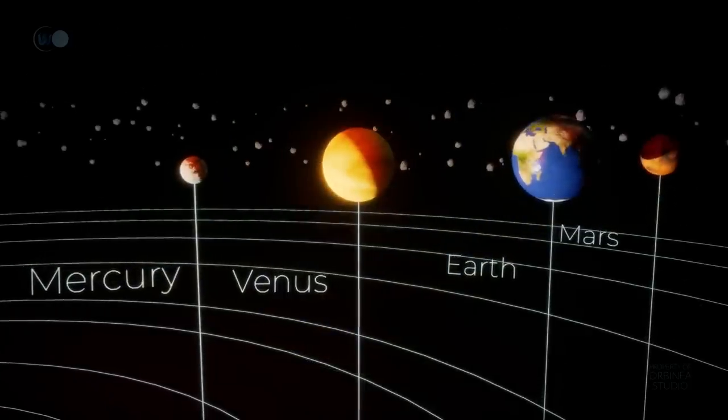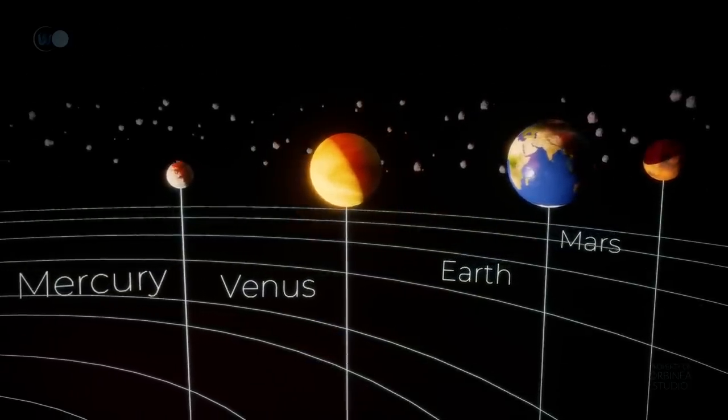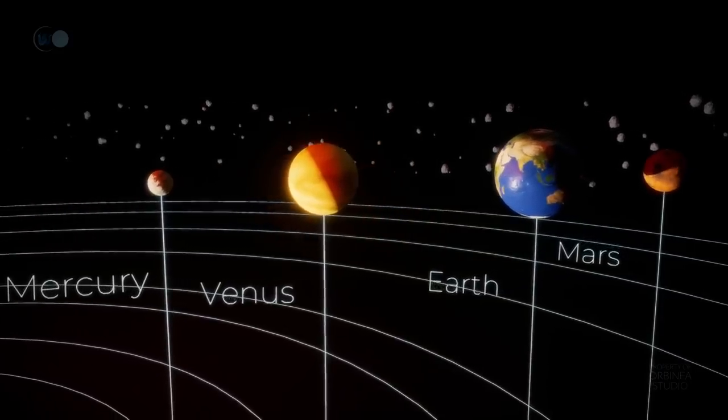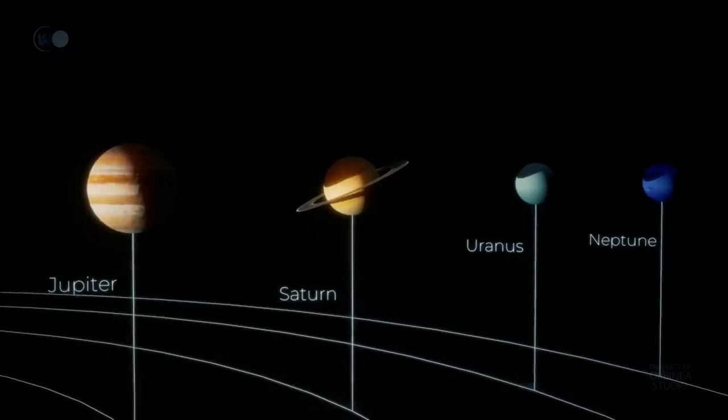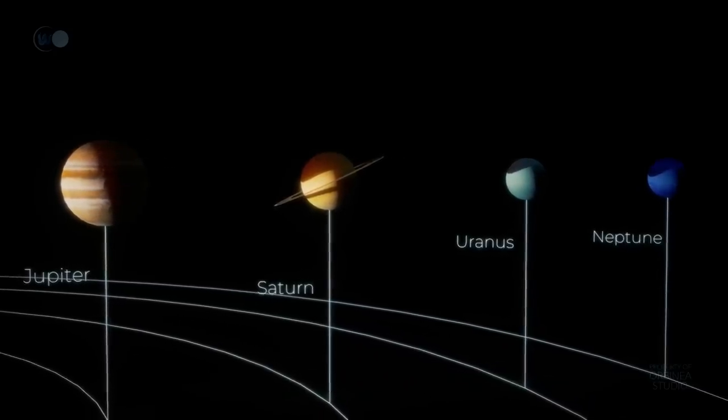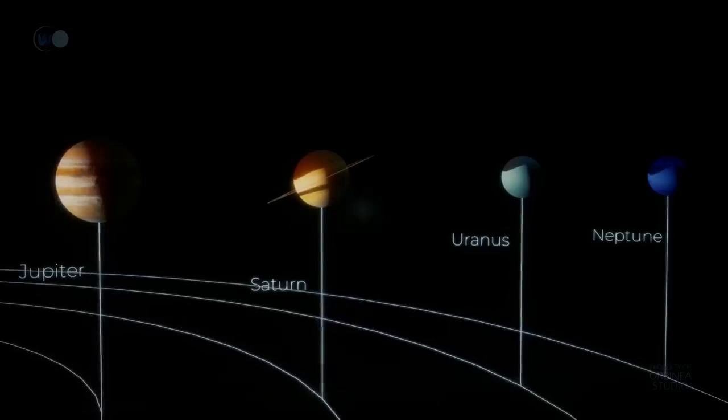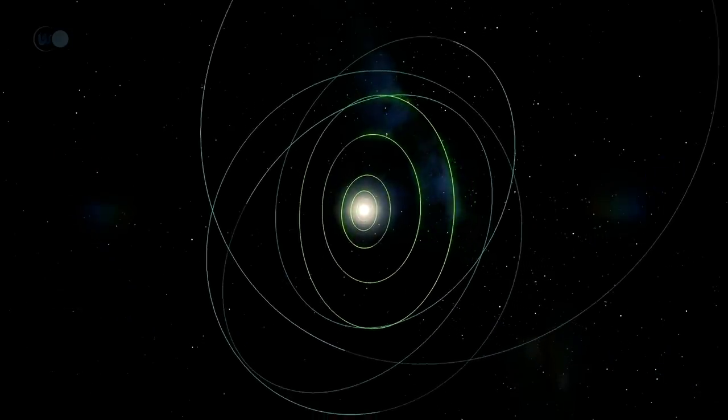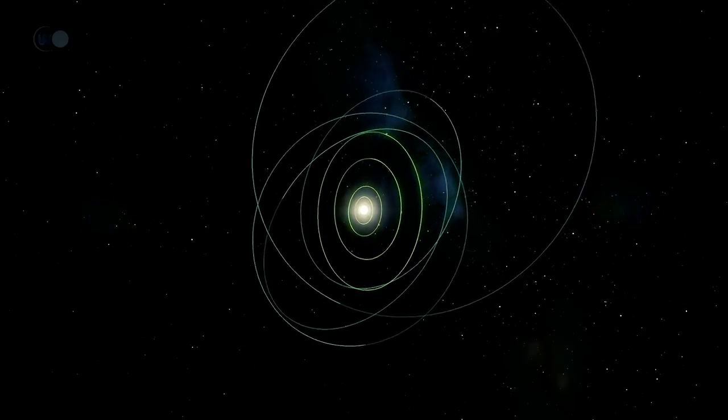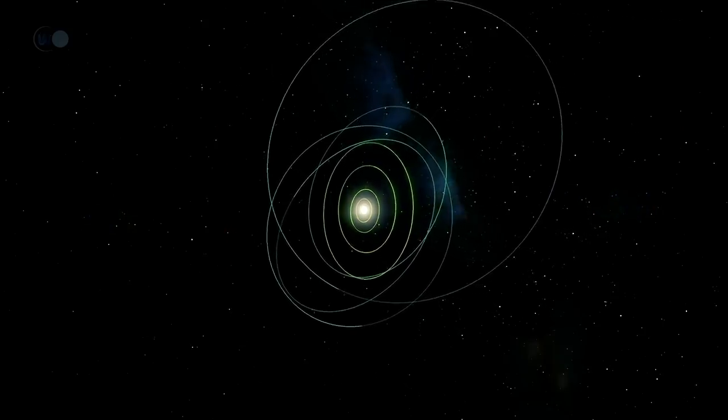Our solar system contains eight planets: Mercury, Venus, our wonderful Earth, Mars, Jupiter, Saturn, Uranus, and finally Neptune, which lies 30.1 astronomical units from the Sun, more than 30 times the distance from Earth to Sun. It is also home to numerous dwarf planets.